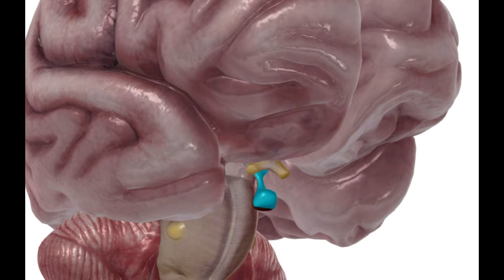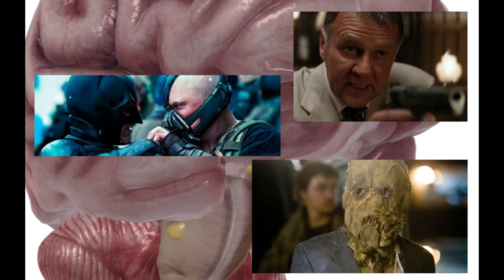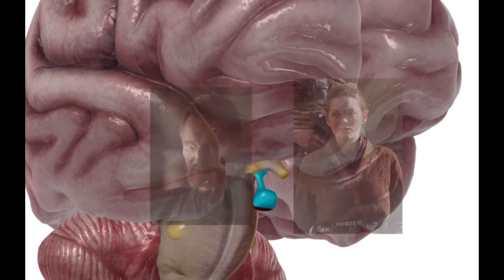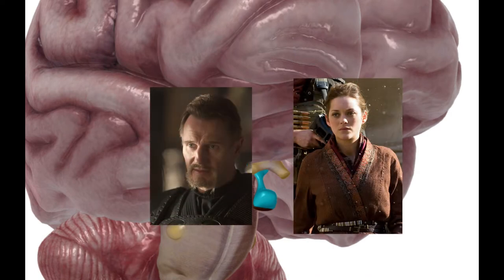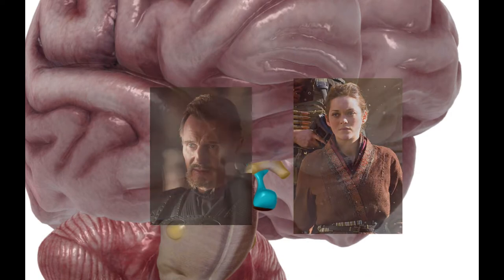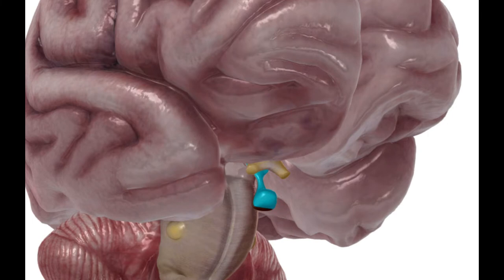Think of a thermostat in your house — you manipulate the thermostat and it controls the AC unit. You might think the AC unit is the main part, but not necessarily. Similarly, like in some movies where you think the main villain is the bad guy, only to find out there's another one behind the scenes — in this case the thyroid is not the ultimate controller.